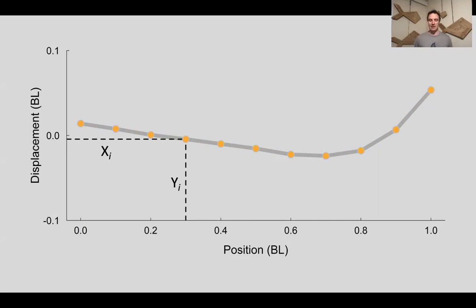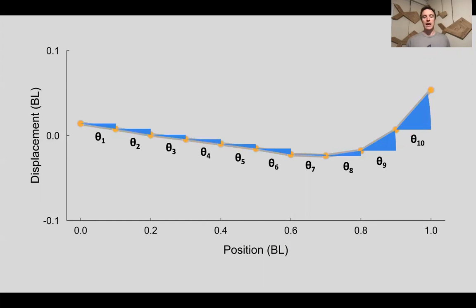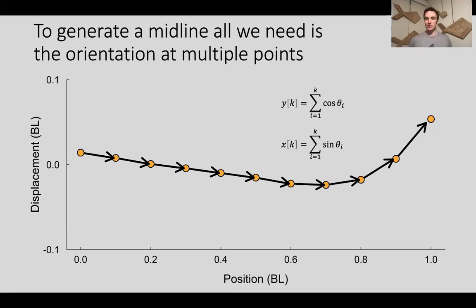However, an alternative way of thinking about this, instead of focusing on the points in x and y space, is to actually focus on the lines. You can think of each line as being at some angle orientation from the previous point on the body. If you use a framework like this, all you really need to know are these orientations, and then you take the cumulative sum of the cosine and the cumulative sum of the sine of all those orientations, and you're actually able to generate a complete midline shape.